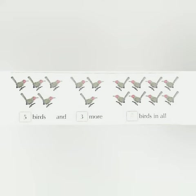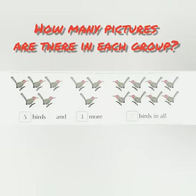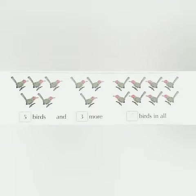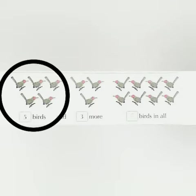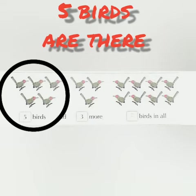So children, the first one is done for you. Next, we have to count how many pictures are there in a group. So let's start: 1, 2, 3, 4, 5 in this group. 5 birds are there.